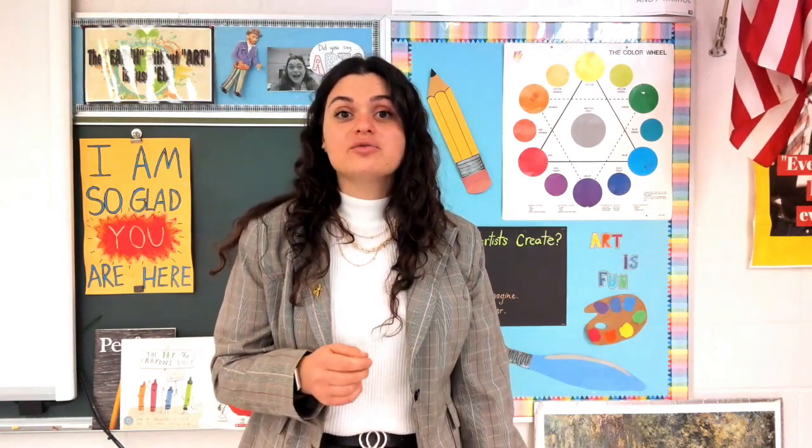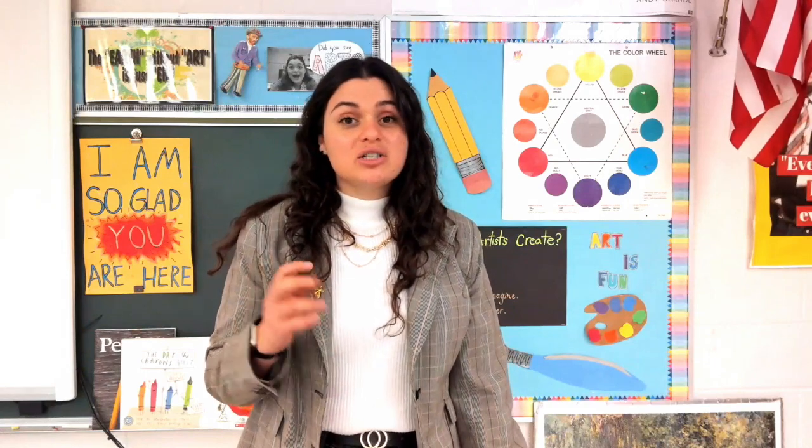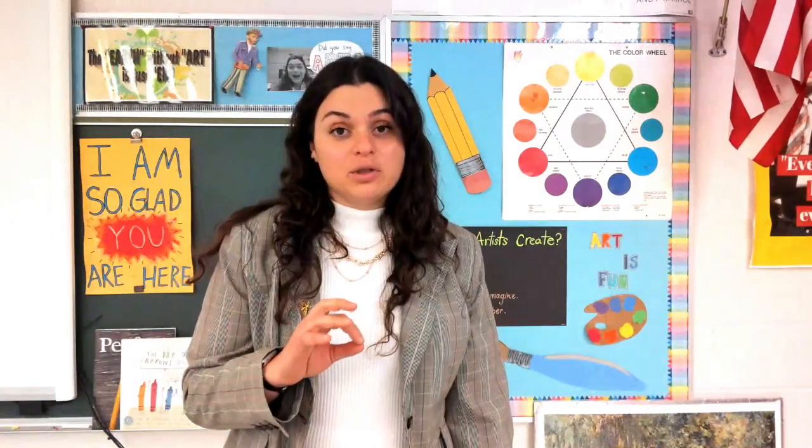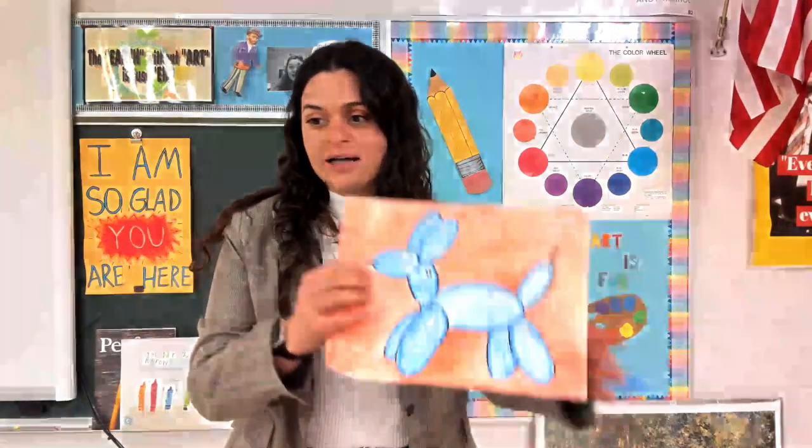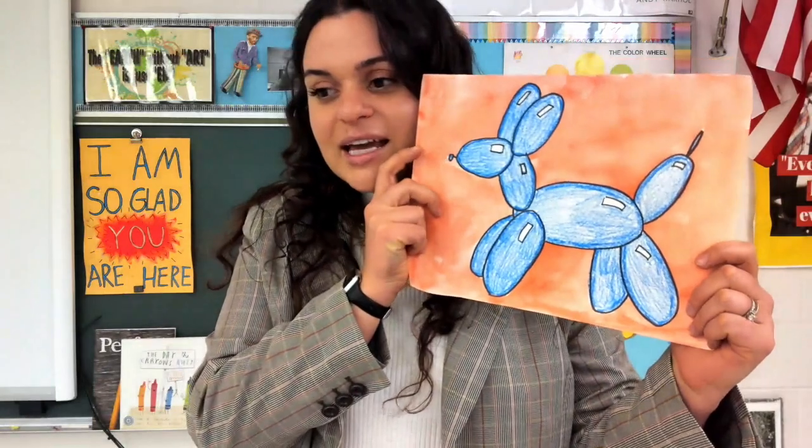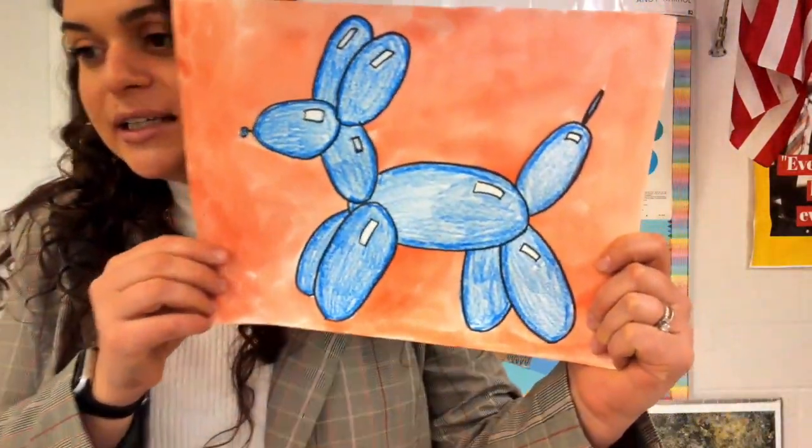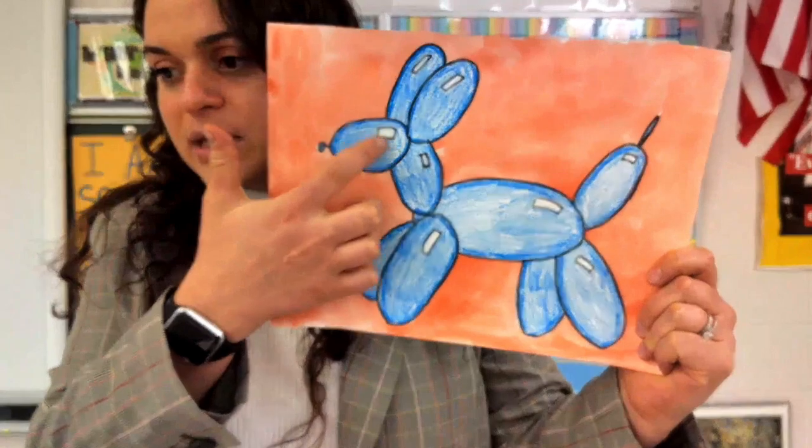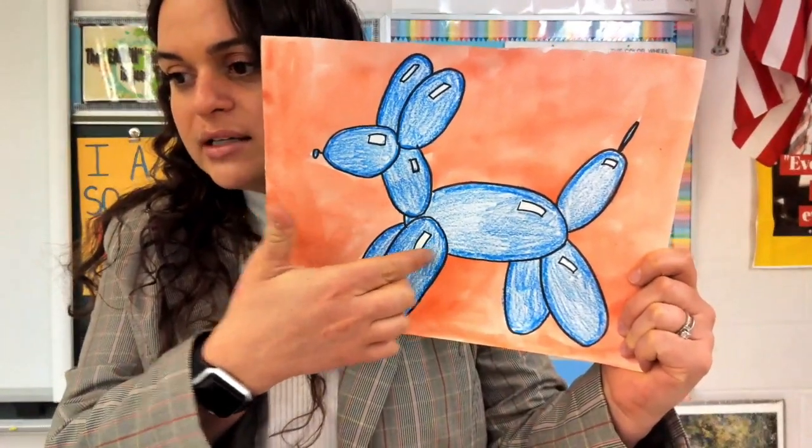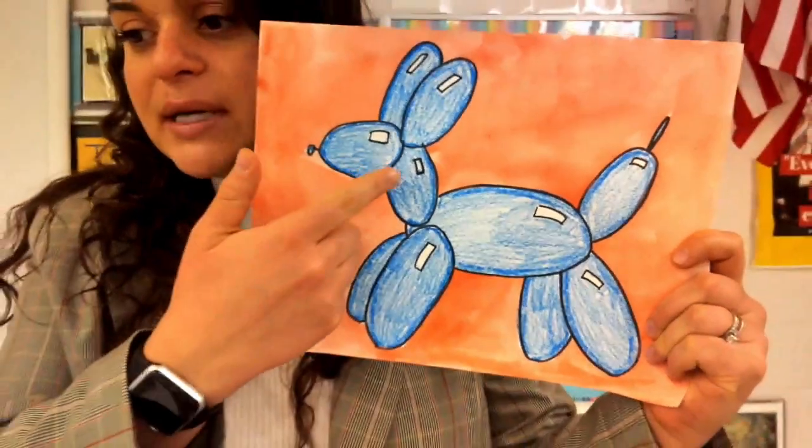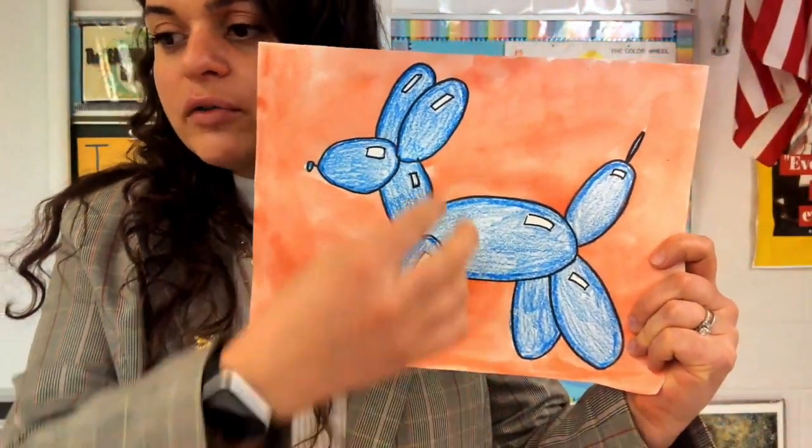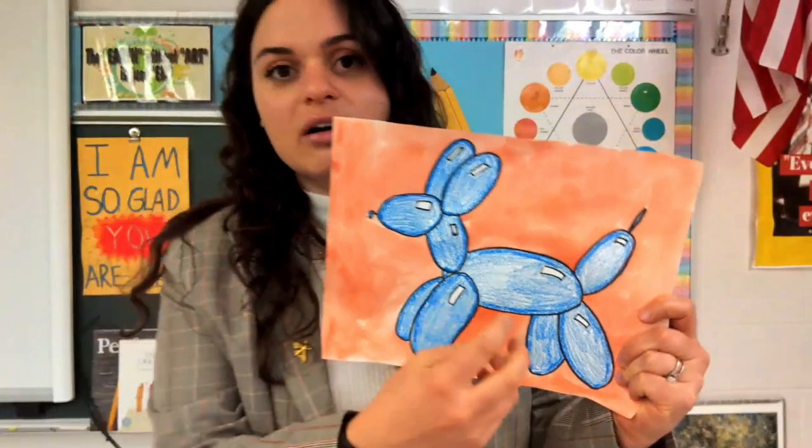This week we are going to draw one of his balloon animals. I'm gonna teach you how to draw a balloon dog but you get to pick whatever color you would like it to be. Here is mine and as you can see it looks like it's super shiny like a balloon. That is because we have these white rectangles that are like the shiny spot of them. I'll walk you through step by step how to draw each one of these oval shapes to put it all together to make our dog. Let's get started.